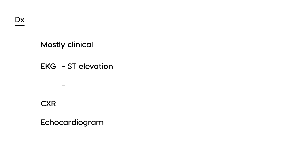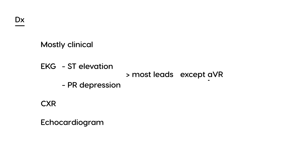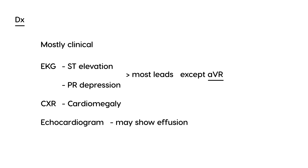The EKG will show classic ST elevation and PR depression — very important to remember. This will occur in most leads, except AVR, where it will be opposite: ST depression and PR elevation. Chest x-ray will show some mild cardiomegaly, and the echocardiogram may show an effusion if there happens to be some accumulation of fluid.